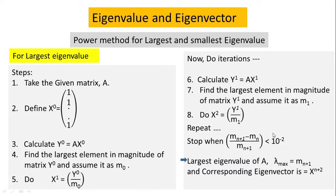I have chosen 10^(−2) as the convergent criteria, but you can choose your own convergent criteria like 10^(−4) or 10^(−5). After convergence, you can conclude that the largest eigenvalue of A, lambda_max, is M(n+1), and the corresponding eigenvector is X(n+2).